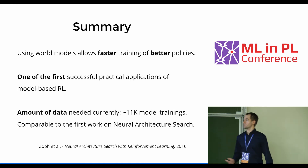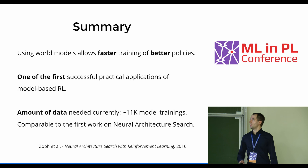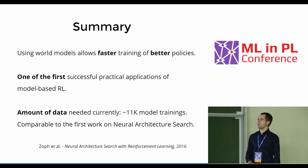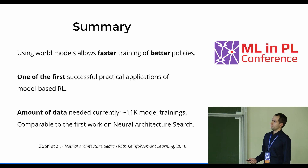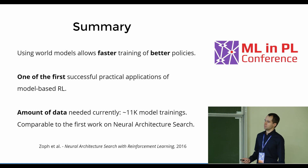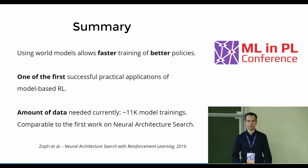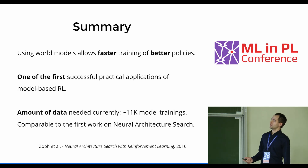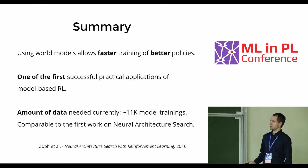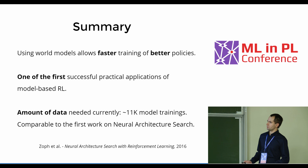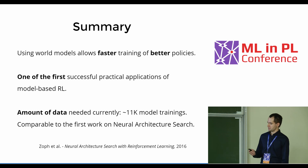To summarize: using world models in some cases allows much faster training and allows us to achieve better policies within our time budget. This is one of the first successful practical applications of model-based RL — model-based RL is widely used in robotics with some successes, but this is a new application where these methods can help. The amount of data currently needed is around 11,000 model trainings, which is a lot — comparable to the first work on neural architecture search — but there is work to be done to decrease this number.